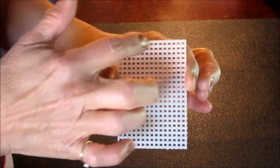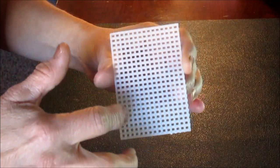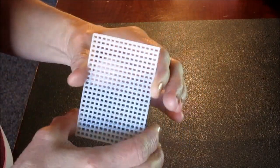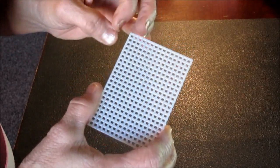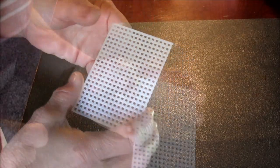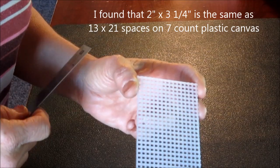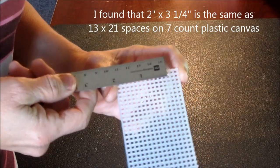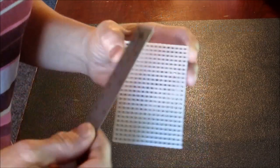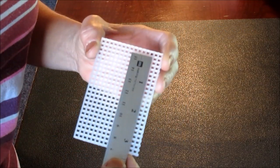Now that we cut it lengthwise and there are 21 holes this way we want to count 13 this way so we will cut on the 14th row of holes so we end up with the size that we need. If you are using seven count plastic canvas it might be easier for you to just cut it two inches wide and three and a quarter inches deep.